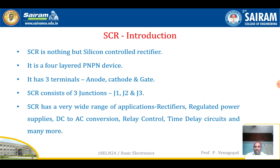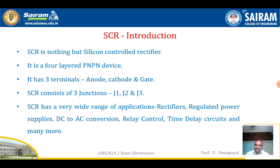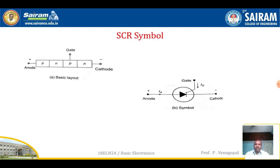SCR has a wide range of applications. You already studied PN junction diode applications — the diode is used in uncontrolled rectification, meaning conversion of AC to DC. By using an SCR, the rectification can be controlled. So SCR is used in controlled rectifiers, regulated power supplies, inverters (DC to AC conversion), relay control, time-delay circuits, and more.